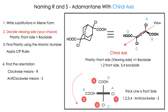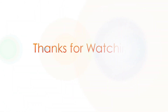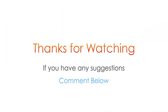Normally people represent with thick line and thin line. You have to choose the viewing angle: front side means thick line, back side means thin line. Front side gets higher priority. So with the numbers 1, 2, 3, 4 going anti-clockwise, it is S. That's all for now — thanks for watching. If you have any suggestions, comment below.